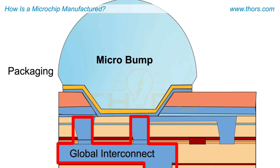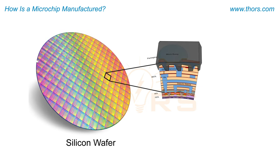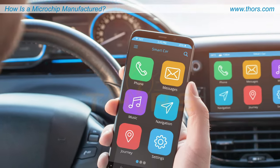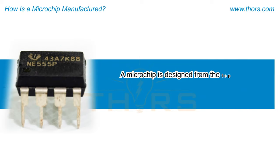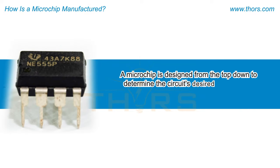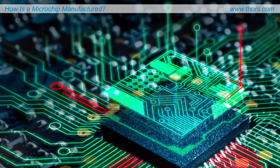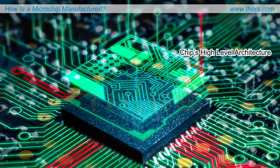The result of these intricate processes is a microchip that powers many of the high-power electronic devices we use daily, such as smartphones, laptops, and cars. A microchip is designed from the top down to determine the circuit's desired function and operating characteristics. In a top-down approach, the initial step in microchip design involves establishing the chip's high-level architecture, functionality, and performance specifications.